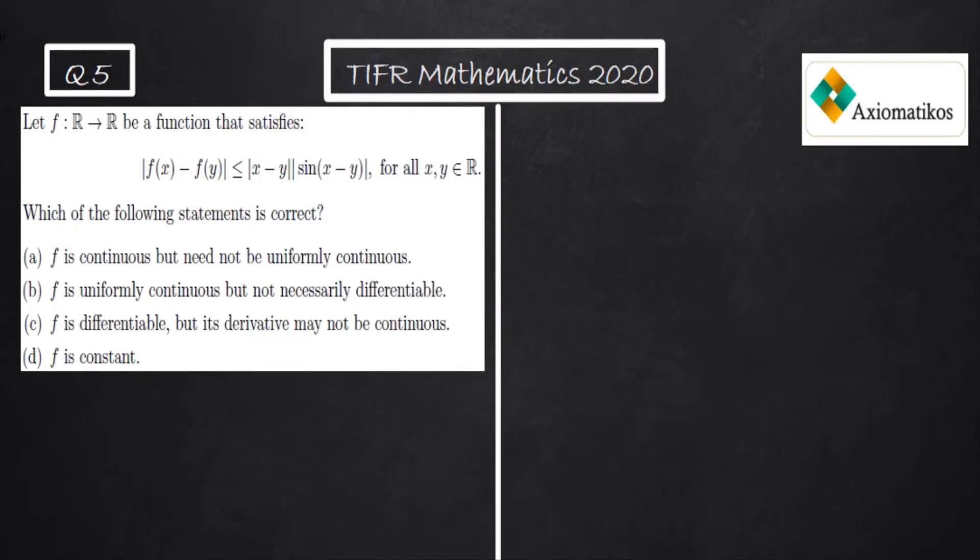Hello everyone, welcome to Axiomatic's course. This video is part of the solution series for TIFR Mathematics 2020. This is question 5 from part A. Let us have a look at this question. We are given a function f from R to R which satisfies this property.